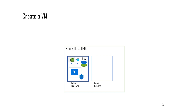Now that you've created your vNet and your subnet, let's create a virtual machine in one of these subnets. Whenever you're creating a virtual machine, you're not just creating that virtual machine — you're also creating other resources to enable your virtual machine to work properly.